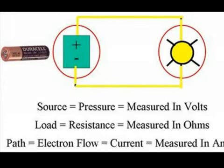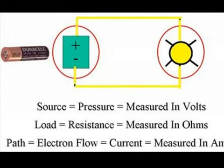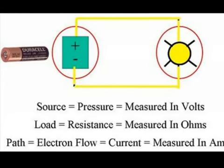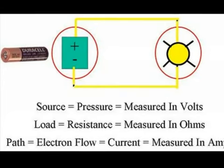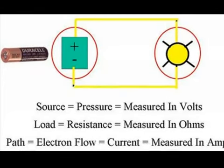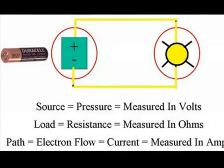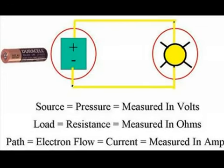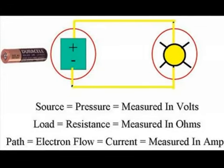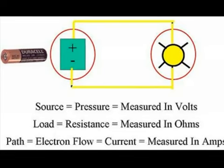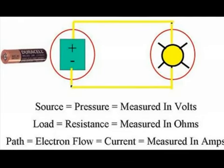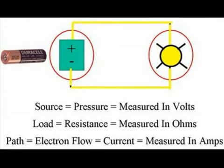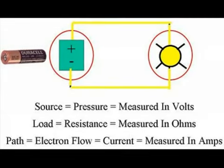And a path provides a way for those electrons to flow from the source, to the load, and back to the source again. We can measure the amount of current flow, or flow of electrons, by using a unit of measurement called amps. Amps is the amount of current flow.